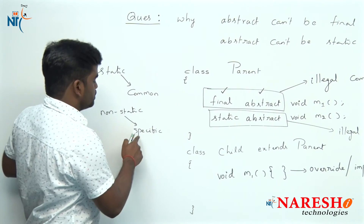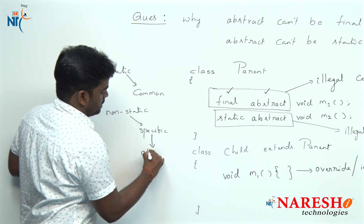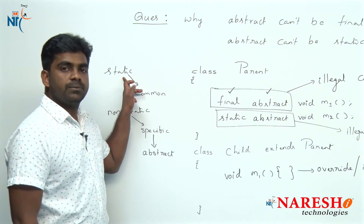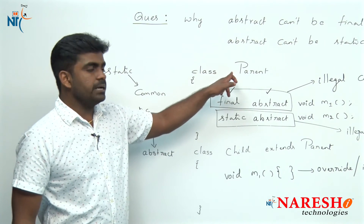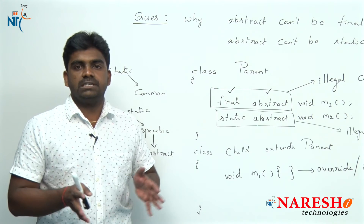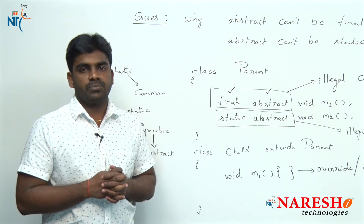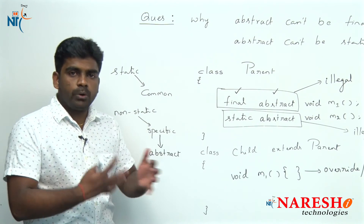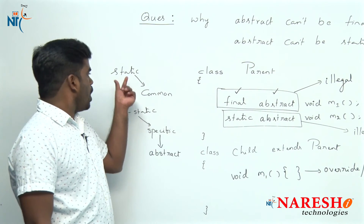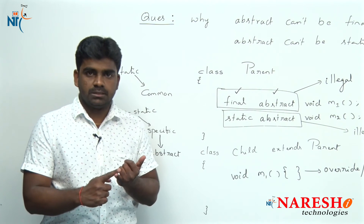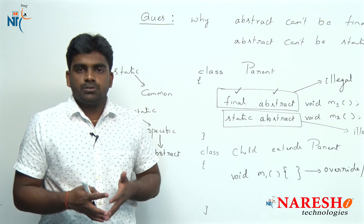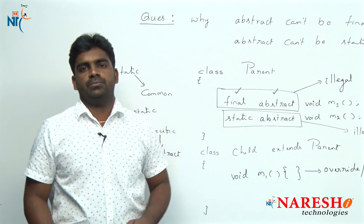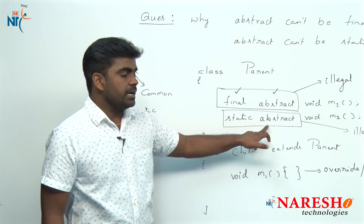Abstract means almost specific. If a functionality is common for all, declare it as static. If you are not defining it in the parent class, it means it is not common for all children — it is specific to a particular child. Specific means non-static. So how can you combine static and non-static together? In other words, how can you combine static and abstract? Static means common; abstract means specific to a particular thing. You are saying one is common and one is specific — impossible to combine. That is why abstract and static cannot be combined.